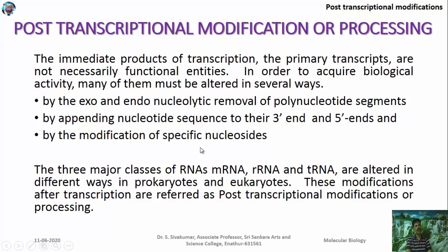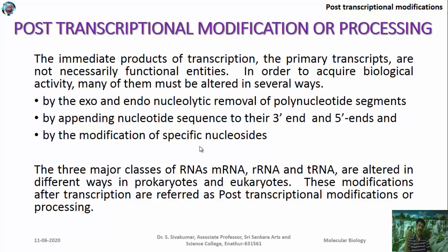Post-transcriptional modification can be condensed into three steps: removal of polynucleotide segments by exo- or endonucleases, appending nucleotide sequences to the 3' end, and modification of specific nucleotides. The three major classes of RNA — mRNA, rRNA, and tRNA — are modified in different ways in prokaryotes and eukaryotes. Eukaryotic mRNA alone undergoes post-transcriptional modification, while prokaryotic mRNA does not.